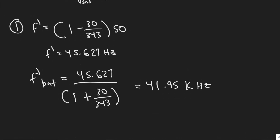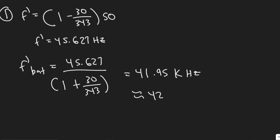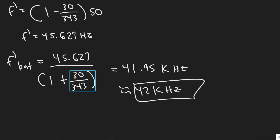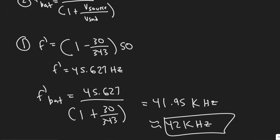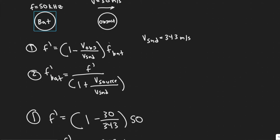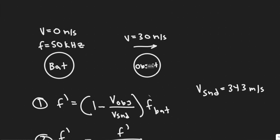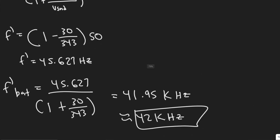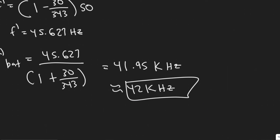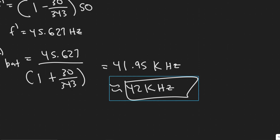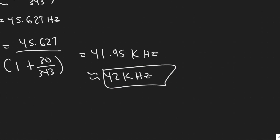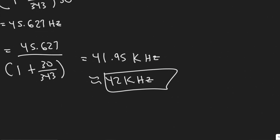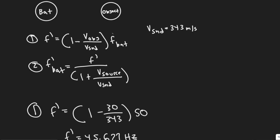So 41.95, you can round it to 42 kilohertz — that's the frequency that the bat is going to receive back. Keep in mind it's much smaller than the initial value: it started at 50 and went down to 42, about a 16% decrease. You can express this in hertz if you'd like — keep in mind there are 1,000 hertz per kilohertz — but I'll leave it in kilohertz since that's the unit they gave us.